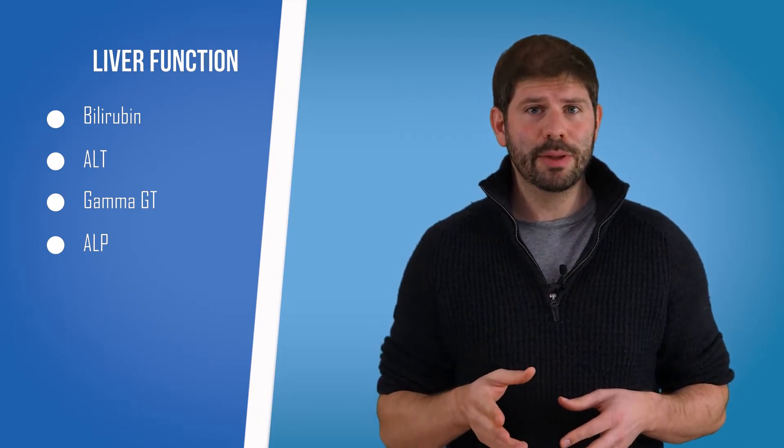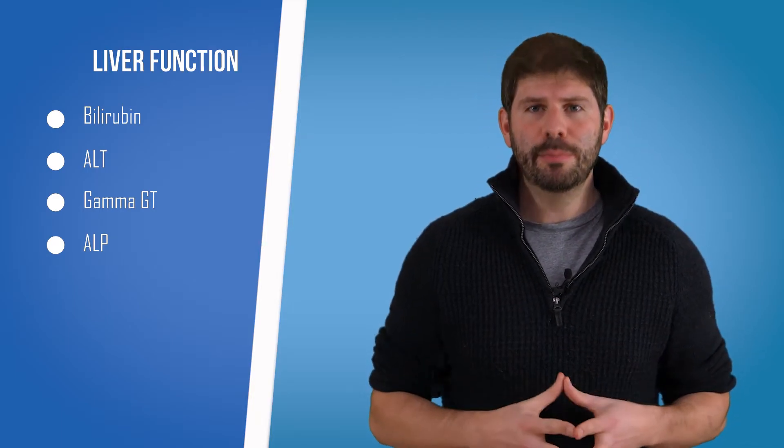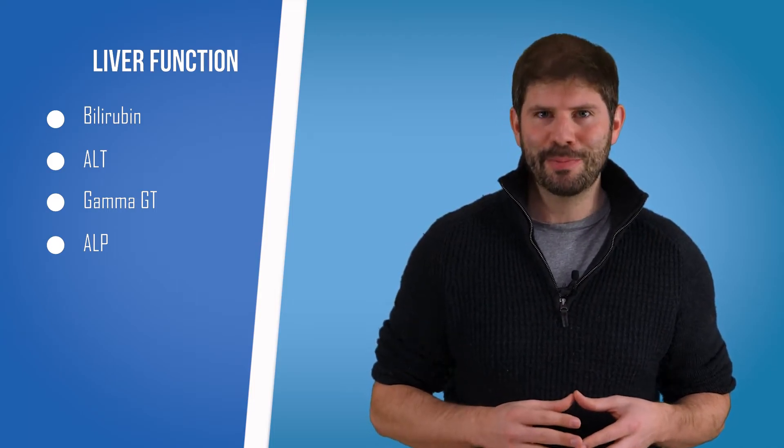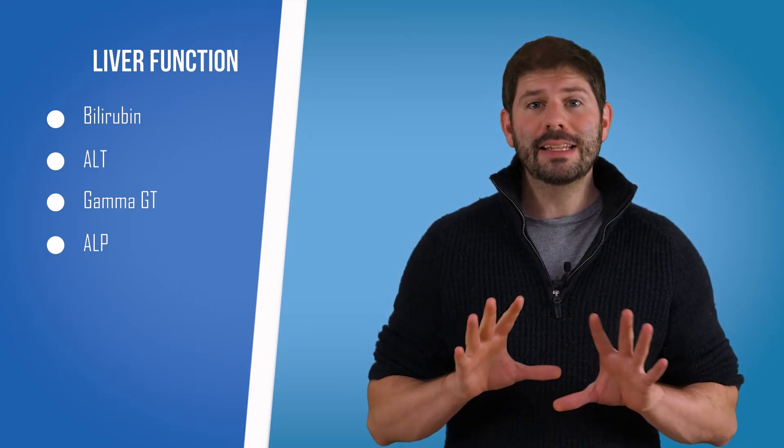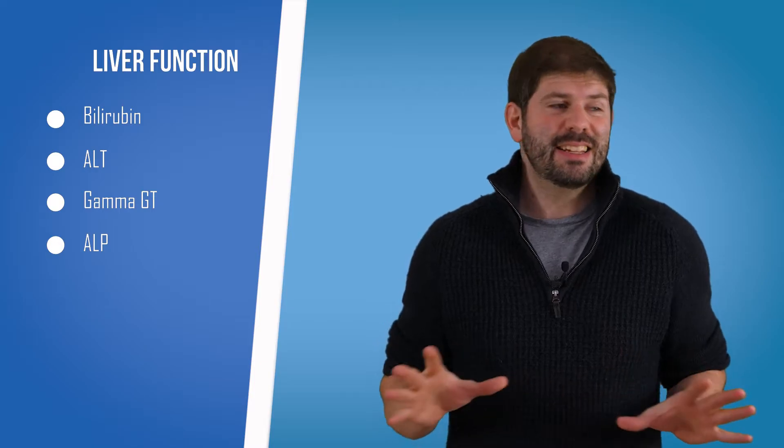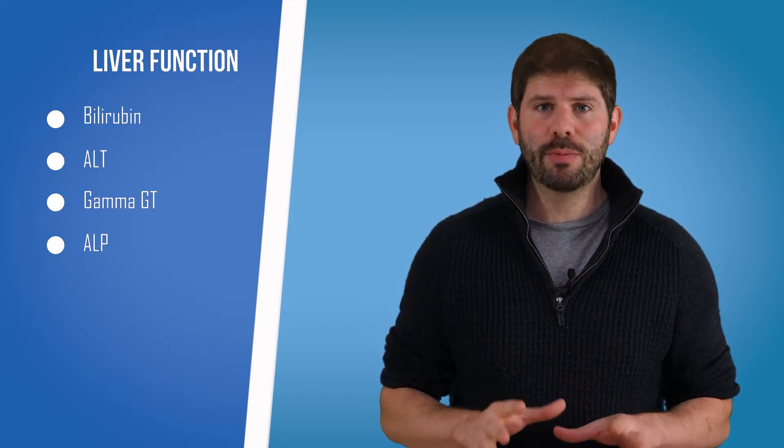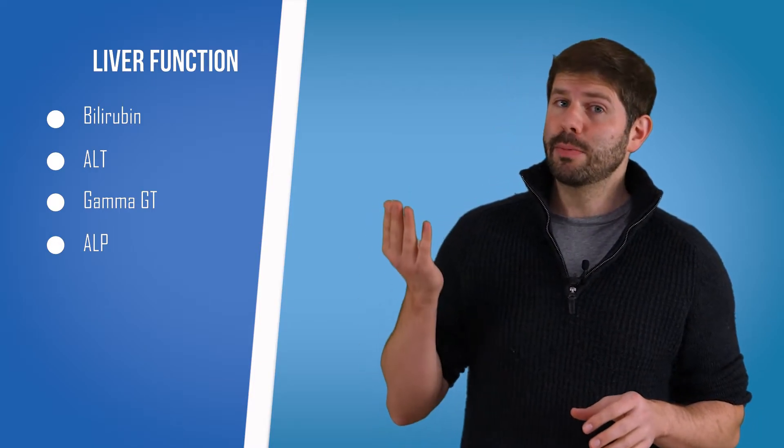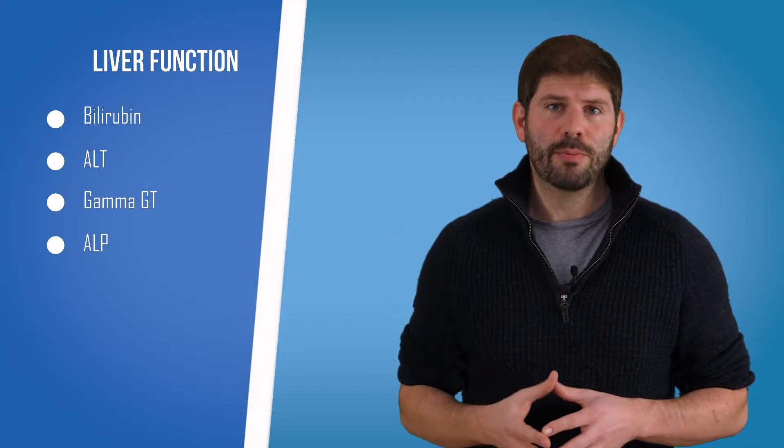Another common cause for high bilirubin is something called Gilbert syndrome or Gilbert's syndrome, depending on who you talk to. That is an inherited condition and rarely causes any major problems. So sometimes people's bilirubin is a little bit high, but it's not a problem.